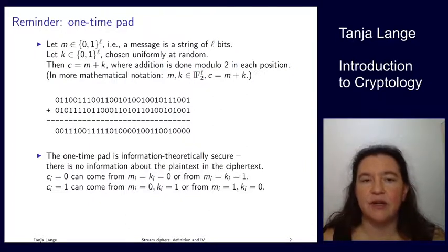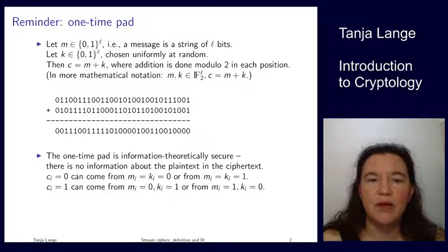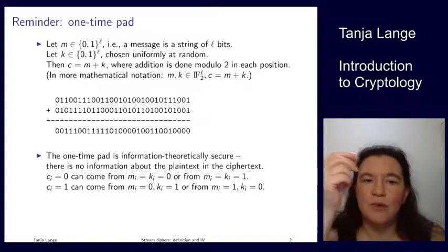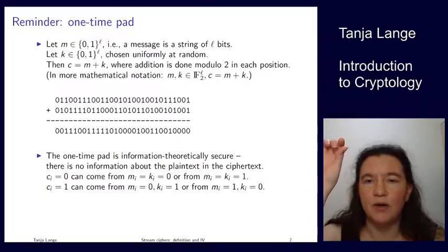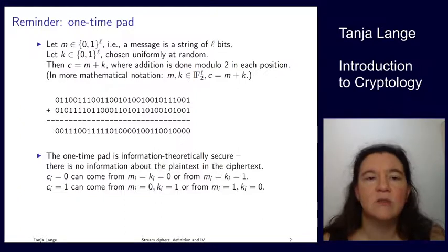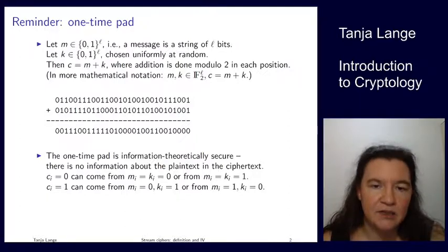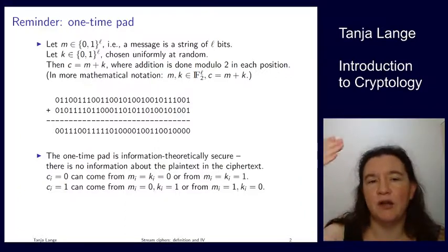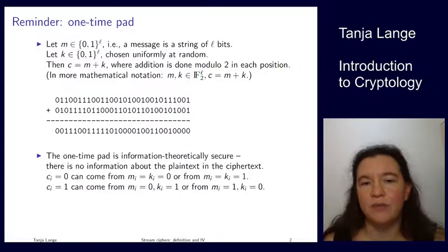It's a great system — it's information-theoretically secure. When you see a 1 in the ciphertext, it could come from a 1 in the plaintext XOR'd with a 0 in the key, or from a 0 in the plaintext XOR'd with a 1 in the key. So seeing the ciphertext does not give us any information on what the plaintext was. There is also no correlation across symbols, so knowing one position's decryption gives no information about another.